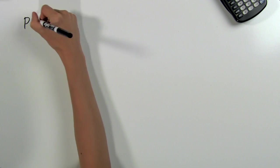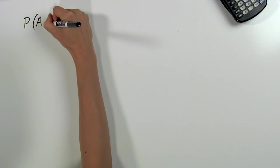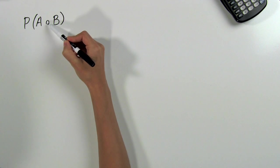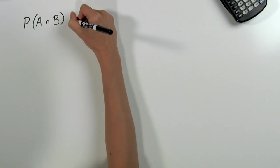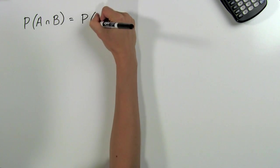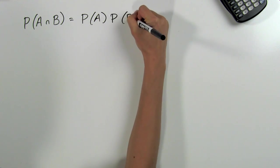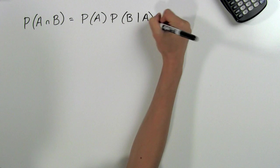The probability of A and B happening, and here we use the intersect symbol for A and B, is equal to the probability of A happening times the probability of B happening given that A has already happened.